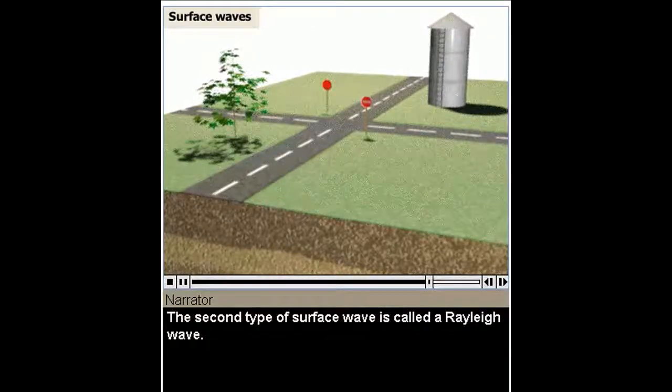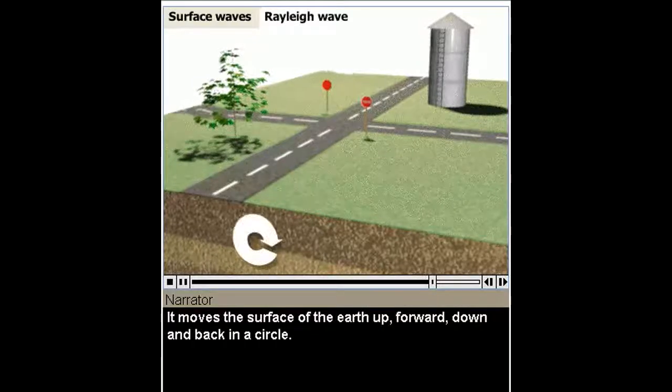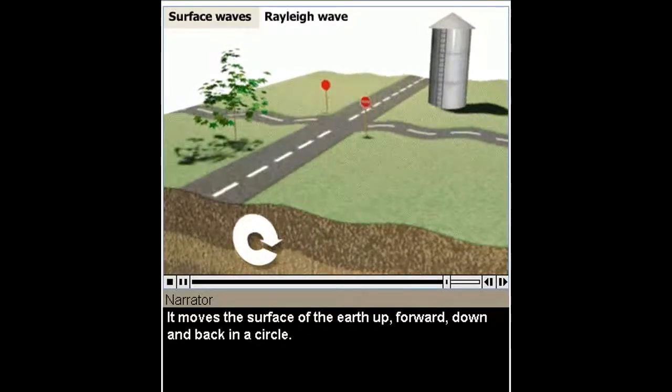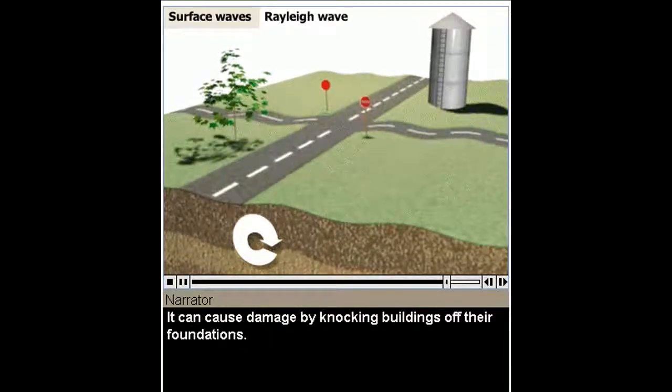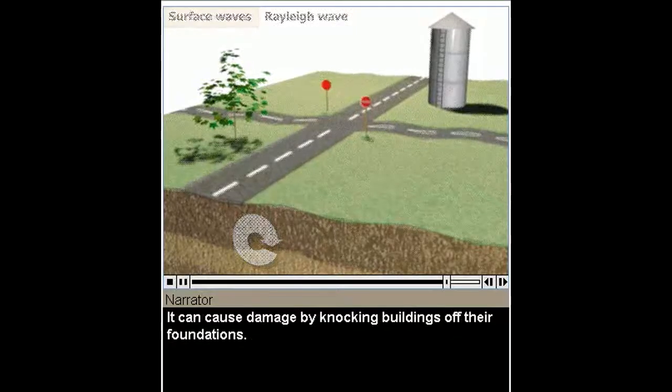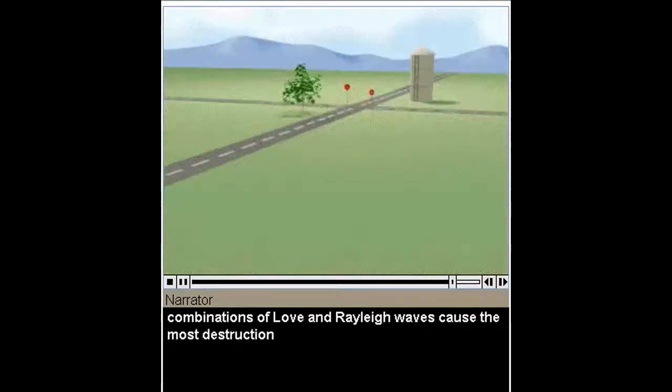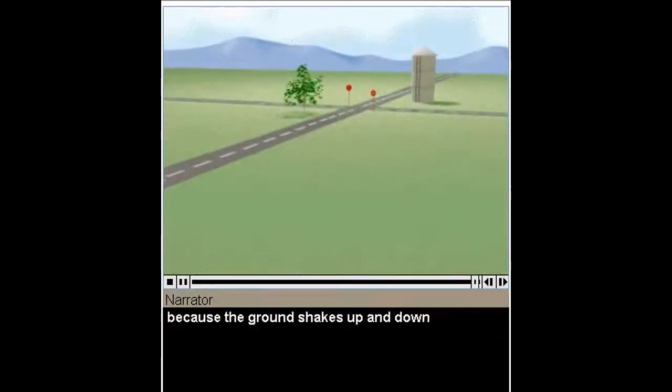The second type of surface wave is called a Raleigh wave. It moves the surface of the Earth up, forward, down, and back in a circle. It can cause damage by knocking buildings off their foundations. In most earthquakes, combinations of love and Raleigh waves cause the most destruction, because the ground shakes up and down, and side to side, at the same time.